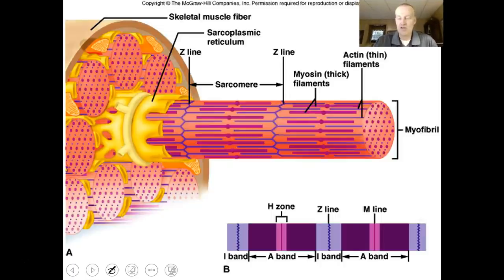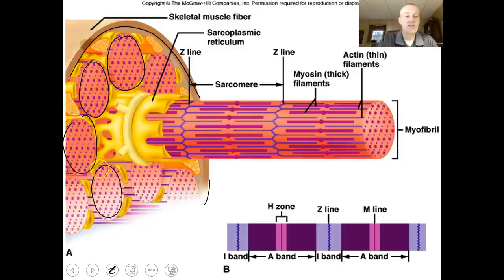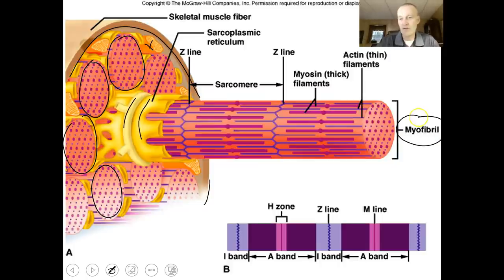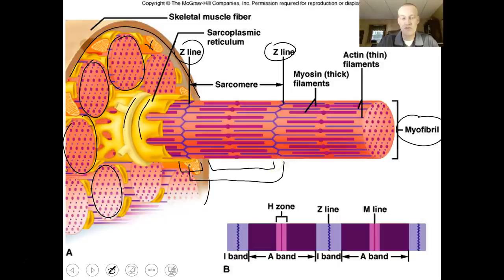Looking at the artist's rendition of the muscle cell, you can see all the myofibrils — the thick and thin bundles of filaments — and the T-tubule and sarcoplasmic reticulum wrapping around the myofibrils, along with mitochondria. If we pull out a myofibril, from Z-line to Z-line is one sarcomere. You can see the I-band, the A-band, the H-zone, and the M-line — all clearly in place.